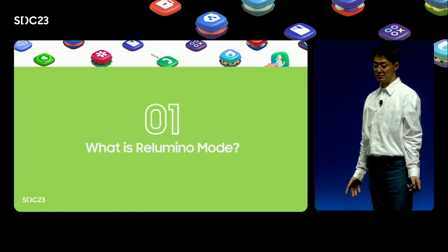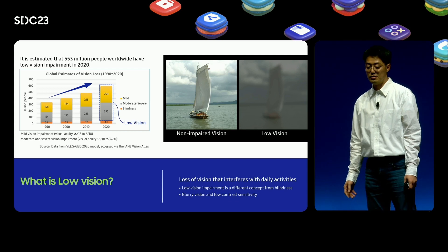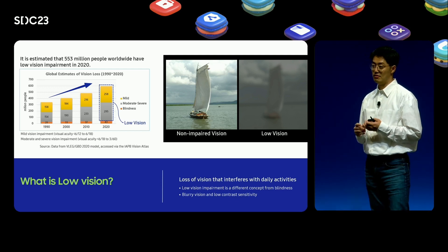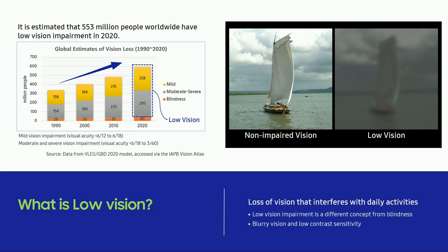What is Rilumino mode? Rilumino mode is a viewing assistant feature for people with low vision. First, let's define what we mean by low vision. Low vision refers to people with vision impairment who have difficulty performing daily activities. The number of people with low vision is increasing worldwide. In 2020, it is estimated that 553 million people worldwide have low vision impairment.